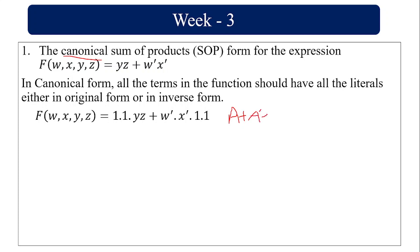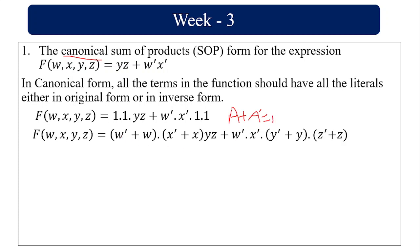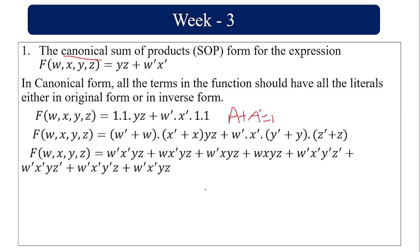Replacing the 1s: the first term becomes (w̄ + w)(x̄ + x)yz, giving terms w̄x̄yz, w̄xyz, wx̄yz, and wxyz. The second term becomes w̄x̄(ȳ + y)(z̄ + z), giving w̄x̄ȳz̄, w̄x̄ȳz, w̄x̄yz̄, and w̄x̄yz — eight terms in total.